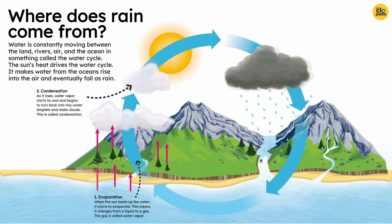2. Condensation. As it rises, water vapor starts to cool and begins to turn back into tiny water droplets and make clouds. This is called condensation.